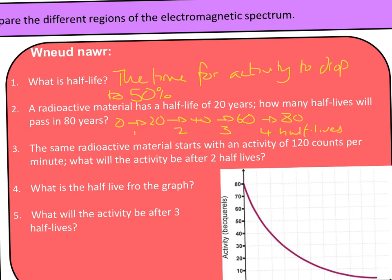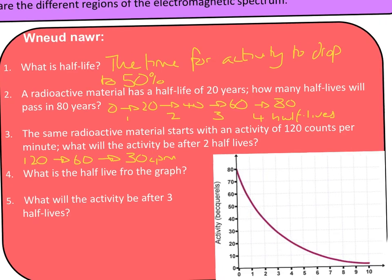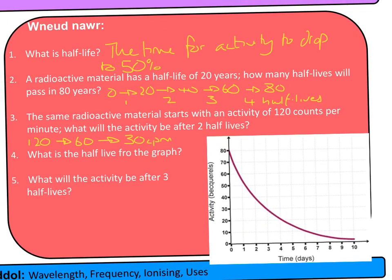The same radioactive material starts with an activity of 100 counts per minute — what is the activity after two half-lives? We start with 120; halving gives 60 for the first half-life, then halving again gives 30 counts per minute after two half-lives.